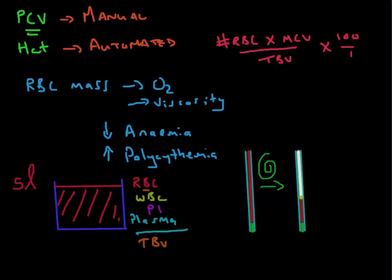At the top, there is plasma. In the middle part, this is our buffy coat. Those of you who've watched the video on the buffy coat will remember that it contains white blood cells and platelets. Then at the bottom, we have our red blood cells.